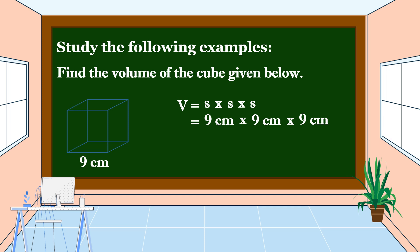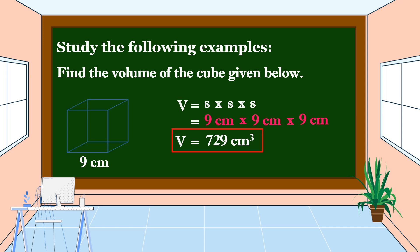Let's get the product. 9 centimeters times 9 centimeters is equal to 81 square centimeters. Times 9 centimeters is equal to 729 cubic centimeters. This is the volume of this cube.